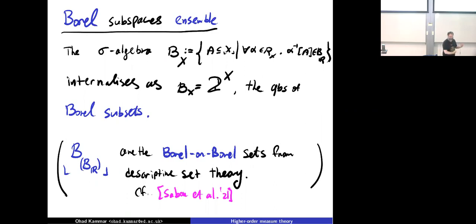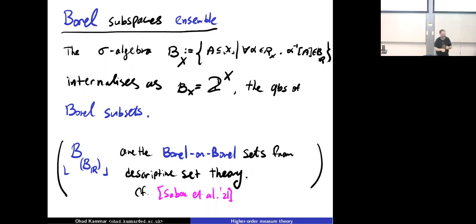You can repeat this: look at the Borel sets of the Borel sets — those are called the Borel sets from descriptive set theory. Martin Sabbock, Dario Stein, and Michael Newman used that to define a model of name generation by taking random numbers, finding a normalization-by-relation connection, giving a slightly more fully abstract model of name generation. Check that paper out — it's super cool.